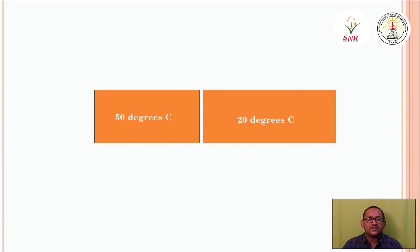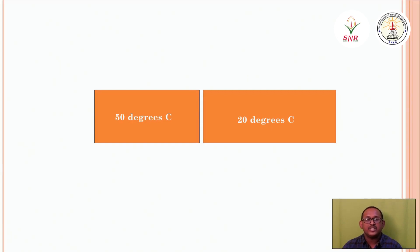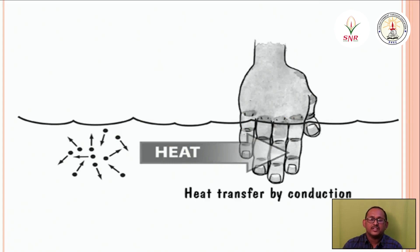One important point: heat is always transferred from a high-temperature area to a low-temperature area. For example, from 50 degrees Celsius to 20 degrees Celsius, heat flows from the hotter region to the cooler one. Our body is also a conductor — heat is transferred from a heating surface to our body by conduction.